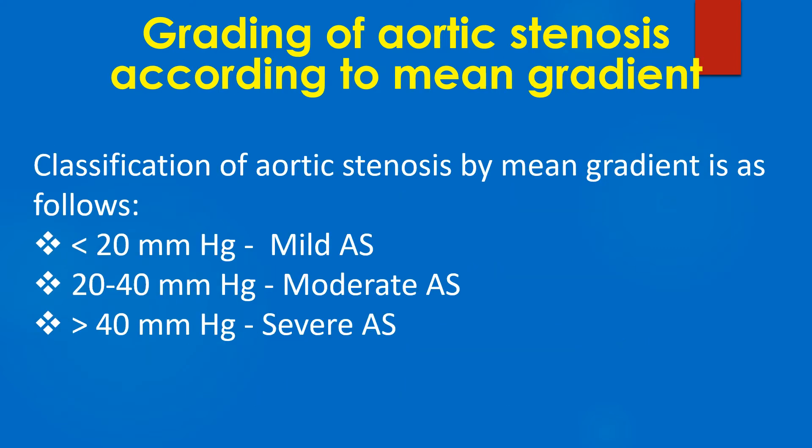Classification of aortic stenosis by mean gradient is as follows: a mean gradient less than 20 mmHg is graded as mild, 20 to 40 mmHg as moderate, and above 40 mmHg as severe aortic stenosis.